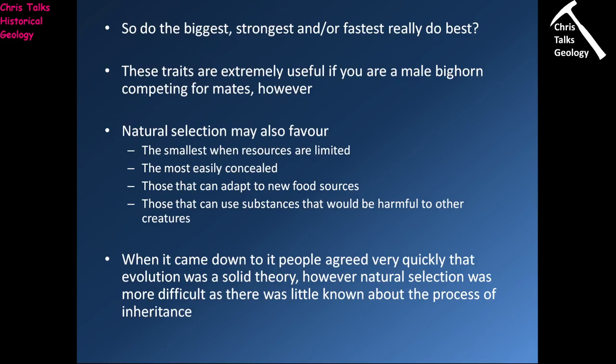Do the biggest, strongest, or fastest really do the best? These traits are extremely useful for something like a male bighorn sheep competing for mates. However, natural selection may also favour the smallest — if resources become limited, the animal requiring the least food becomes the most efficient. It may also favour animals which are most easily concealed, since in environments with very high rates of predation, being best at hiding is a massive advantage. Natural selection may also favour animals that can adapt to new food sources — rats, for instance, are brilliant at using multiple food sources, which makes them amazingly successful.